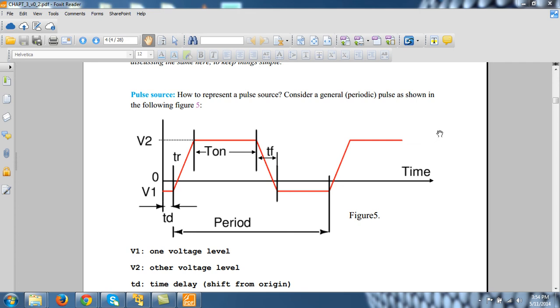Well, let's learn how to represent the pulse source in SPICE. This is how a general pulse source will look like. It may be a voltage or current.